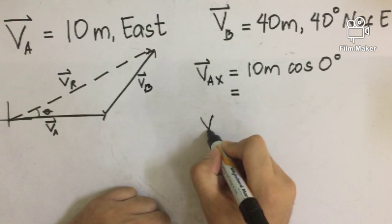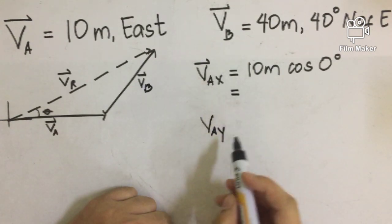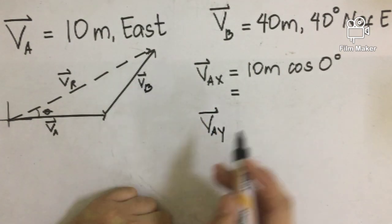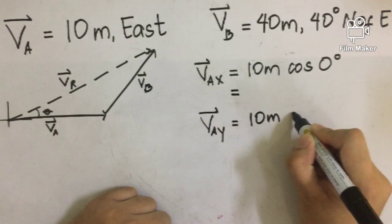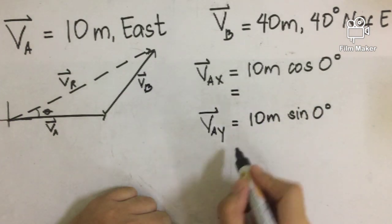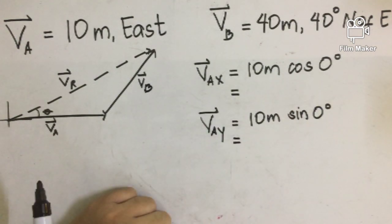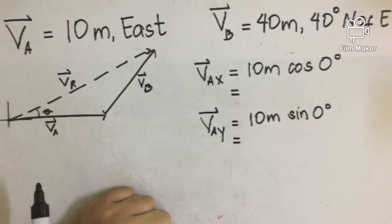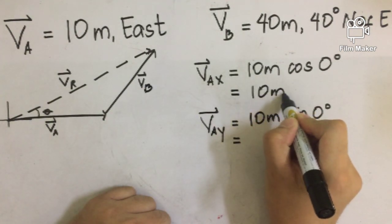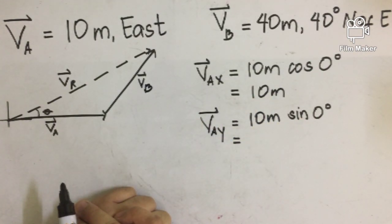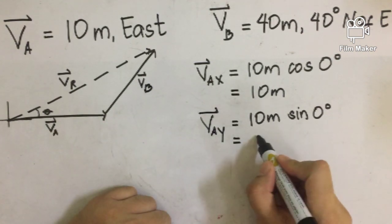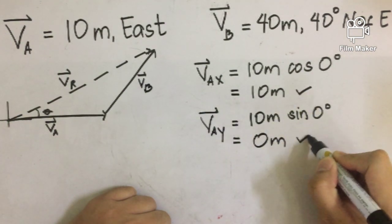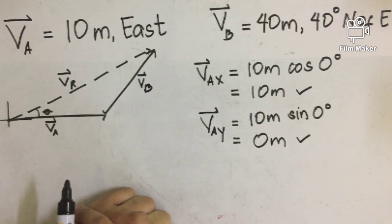For the y component of Vector A, we can write it as Vector A sub y, by applying the sine operation. 10 cosine zero results to 10 meters because cosine zero is equal to 1, and 10 times 1 equals 10. Sine zero, on the other hand, is equal to zero, so 10 times zero is equal to zero. For our first vector, we don't have any y component — only the x component — because Vector A lies along the horizontal axis.